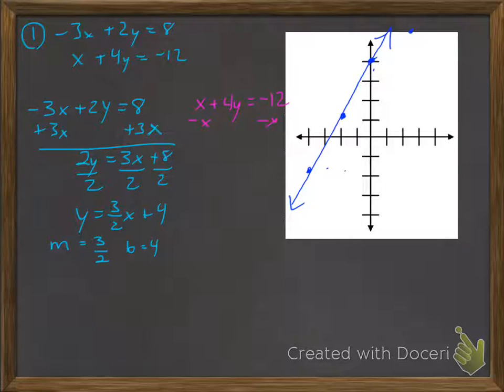So for this next one, I have x plus 4y equals negative 12. I'm solving for y, so I'm going to subtract x. Negative x minus 12, divide by positive 4. And I have y equals negative 1 fourth x minus 3. My y-intercept is negative 3, my slope is negative 1 fourth.